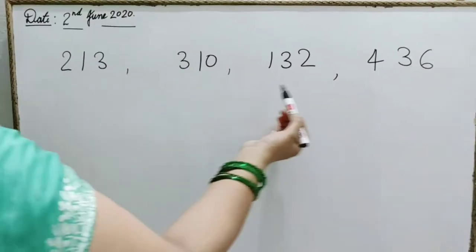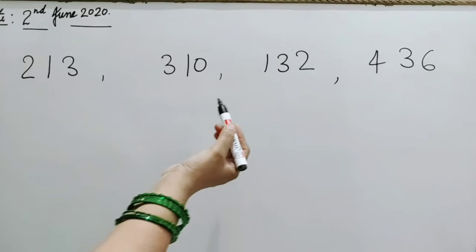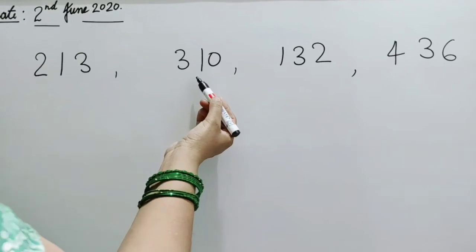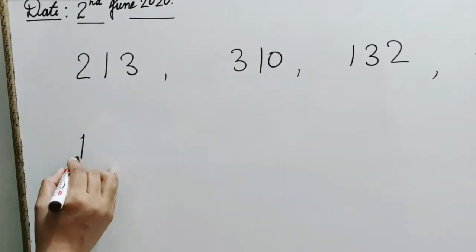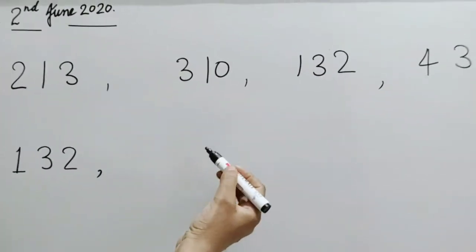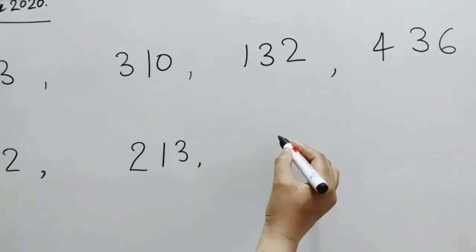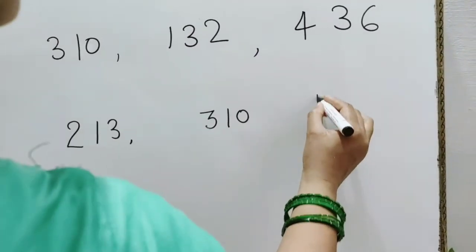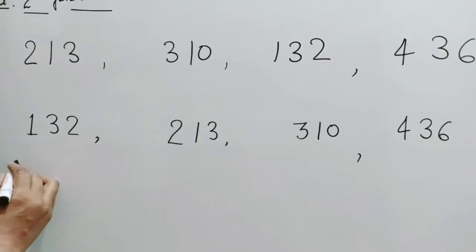Let's arrange these numbers in ascending order. Children, find the smallest number. 132 is the smallest number, so write first 132. After that 213. After that 310. And at last 436. These are in ascending order.